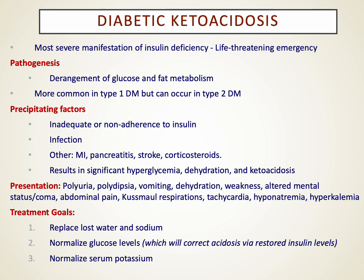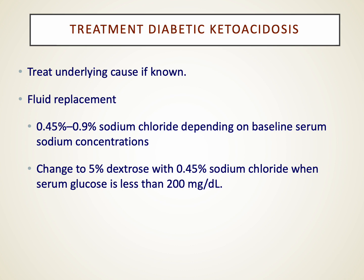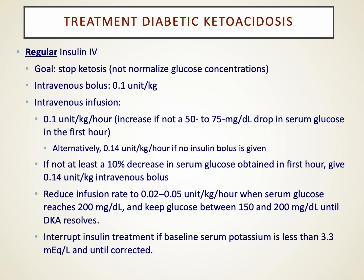Treatment of ketoacidosis typically starts with fluid replacement — almost always normal saline — continuing until blood sugar levels reach around 200 to 250. We also start regular insulin intravenously in a standardized regimen, usually around 0.1 units per kilogram as a bolus, then an infusion targeting a reduction in blood sugars of about 50 to 75 milligrams per deciliter each hour, titrated until about 200 to 250, at which point we back off on the insulin drip.